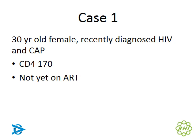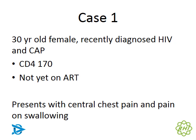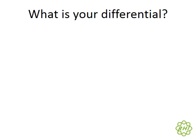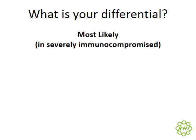Let's start with the first case: a 30-year-old lady recently diagnosed with HIV and community-acquired pneumonia. She has a CD4 of 170 and is not yet on ARVs. We'll briefly cover an approach to odynophagia — the differential for a patient presenting with painful or difficult swallowing who is severely immunocompromised.